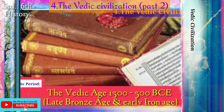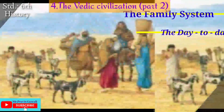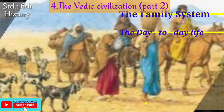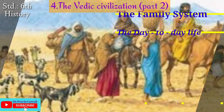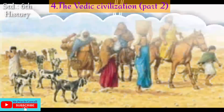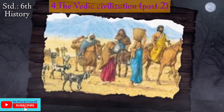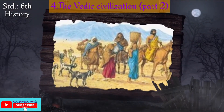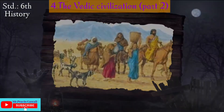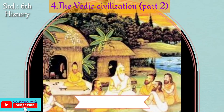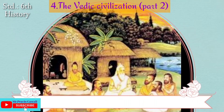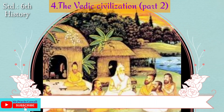Today we shall study the family system and day-to-day life of Vedic civilization. We begin with the family system. A joint family system was established in the Vedic period. It was patriarchal, or patrilineal, meaning father-line. Do you know the meaning of patriarchal system? If you have any idea, you can type your answer in the comment box below the video.